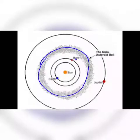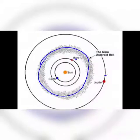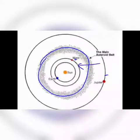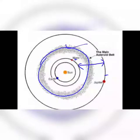Asteroids revolve around the Sun in a path that lies between Mars and Jupiter's orbit. The area between Mars and Jupiter's orbit is also known as the Asteroid Belt.